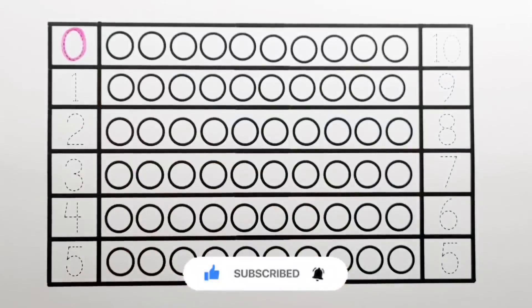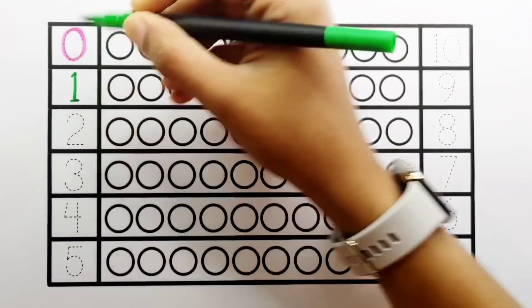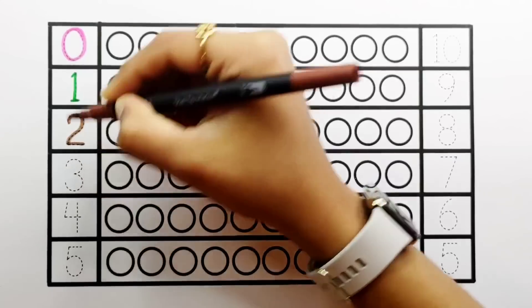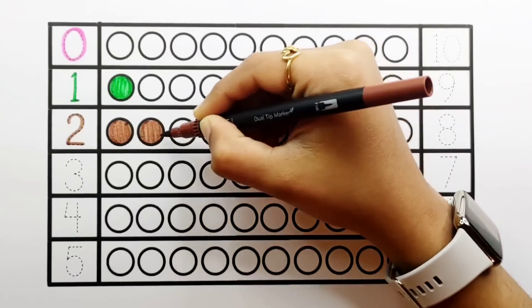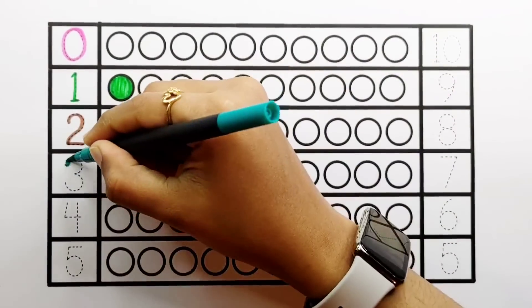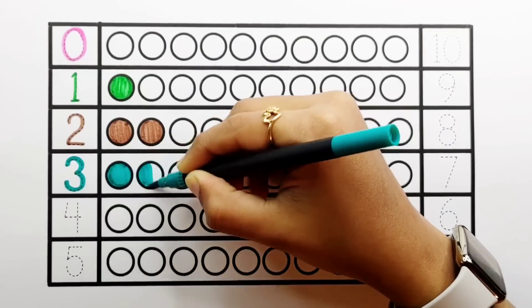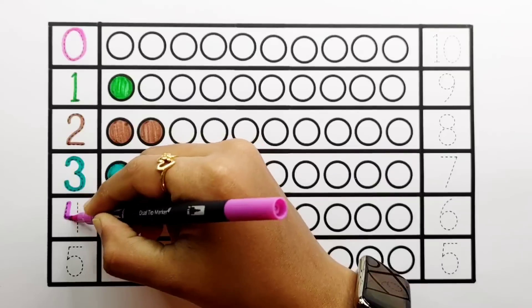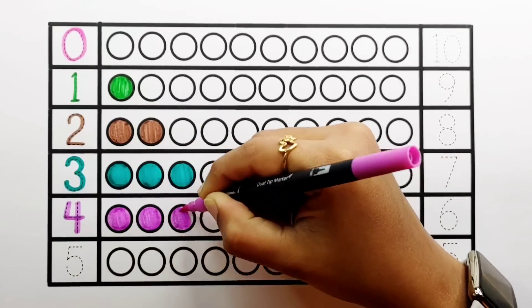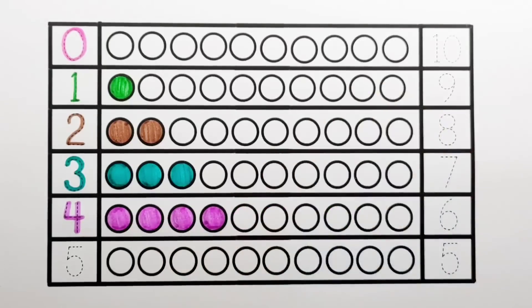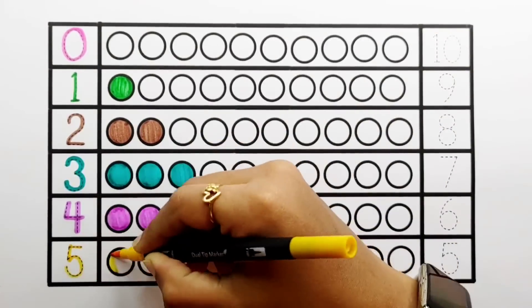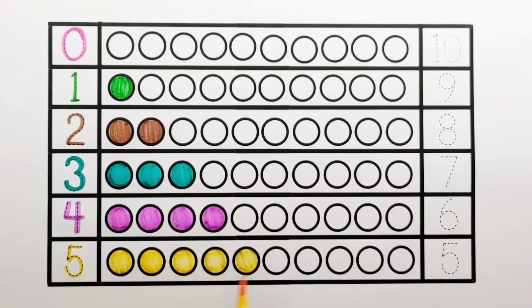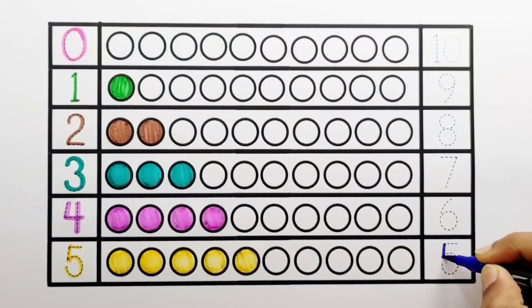0 balls. 1 — 1 ball. 2 — 1, 2 — 2 balls. 3 — 1, 2, 3 — 3 balls. 4 — 1, 2, 3, 4 — 4 balls. 5 — 1, 2, 3, 4, 5 — 5 balls.